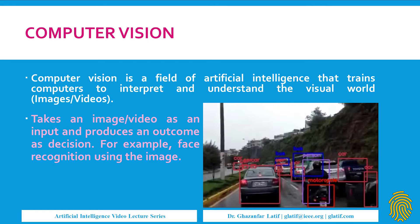For example, face recognition is an example of computer vision. In the same way, if you want to detect a tumor from MRI images, skin images, or CT scan images, tumor or cancer detection and different disease detection based on images is another example. Similarly, fingerprint recognition and handwritten character or word recognition are also examples of computer vision.